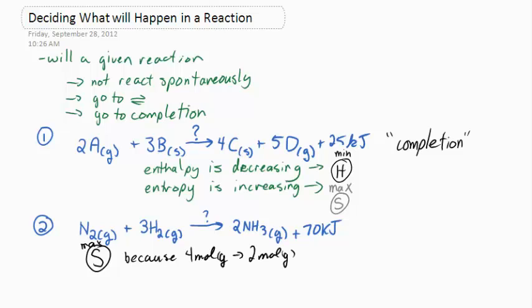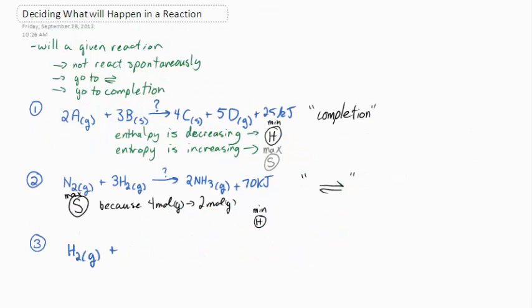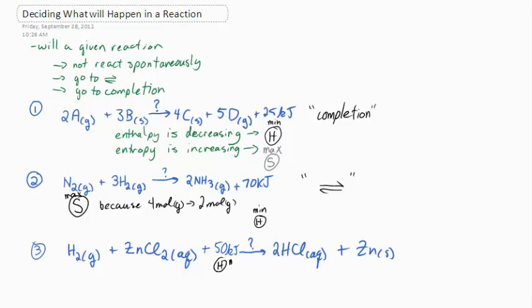Maximum entropy is in the reactants because four moles, one of nitrogen and three of hydrogen, is greater than the two moles of gas in the ammonia. It's also exothermic, so one favors reactants, the other products, and that's equilibria.